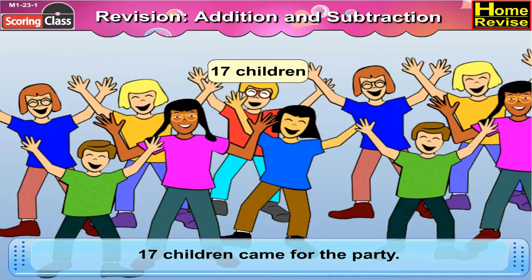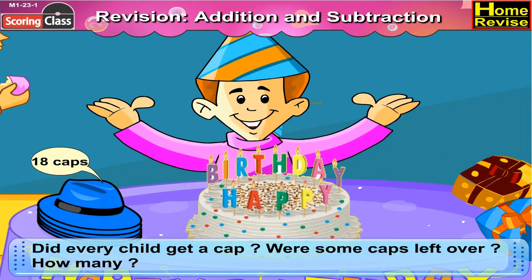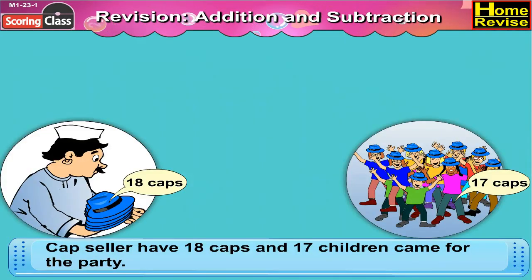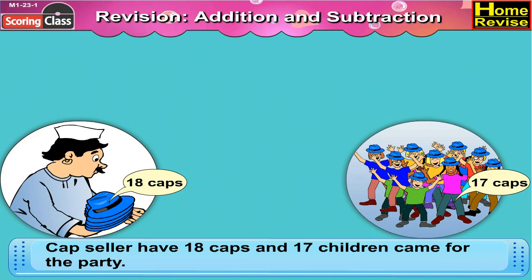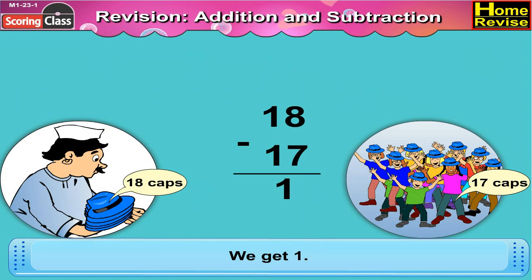17 children came for the party. Did every child get a cap? Were more caps left over? How many? The cap seller had 18 caps, and 17 children came for the party. Subtract 17 from 18 — we get 1.